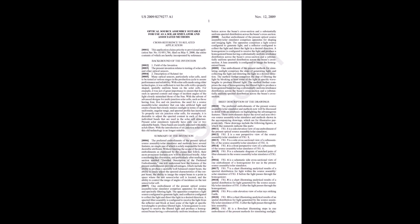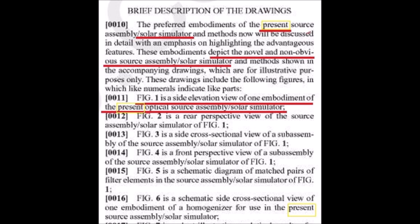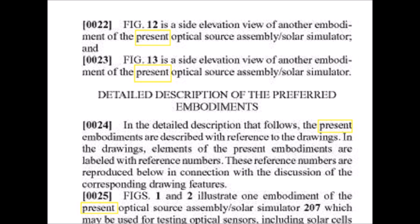...patents showing the diagrams and describing the diagrams. They talk about the present solar simulator, different iterations. There's a couple different - I believe three different ones they show: figure 1, 12, and 13, different types but the same thing. That means there's three ships up there.